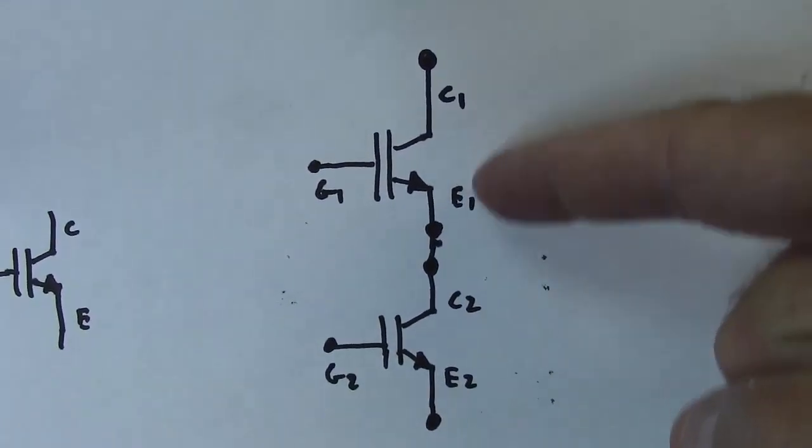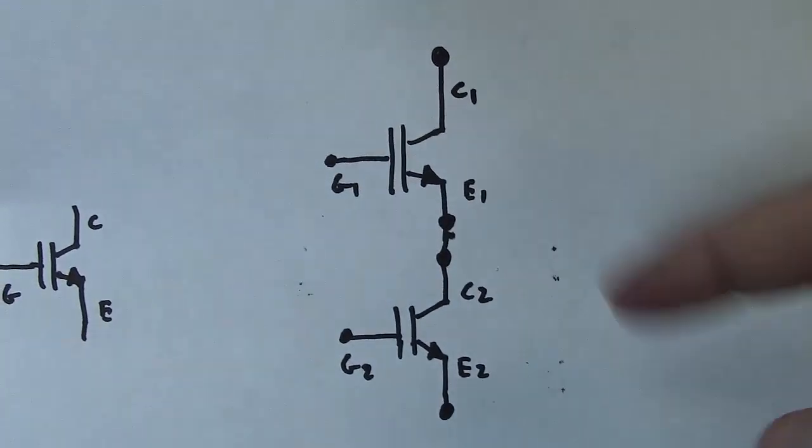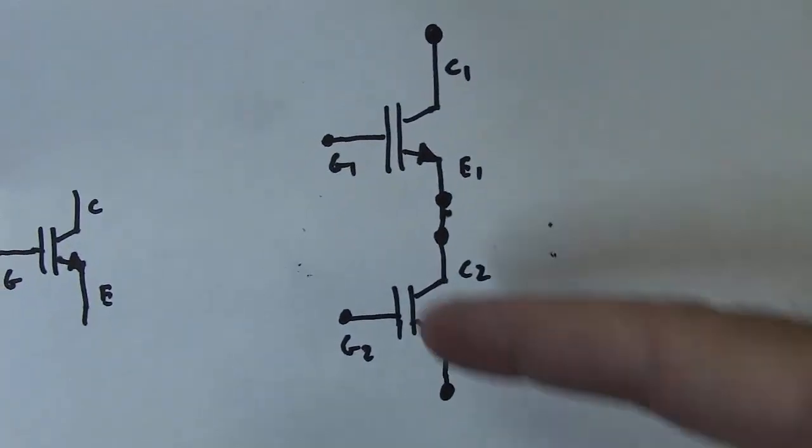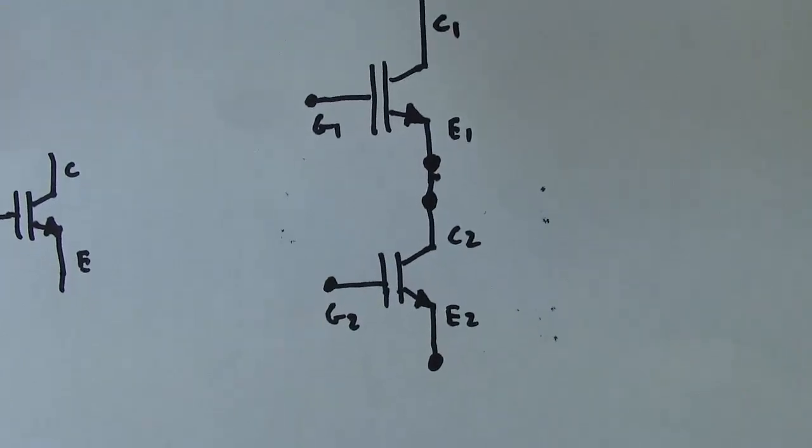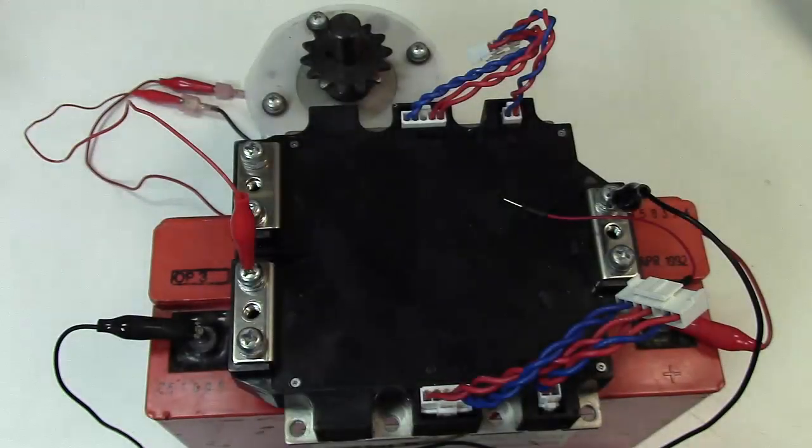So this is testing the top IGBT. So we've already verified by doing this that this IGBT, E1, C1, and G1 are okay. Now we're going to shift and check the second IGBT in the brick.